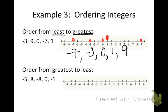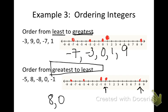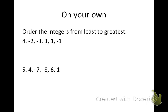We're going to try the next example. I'm just going to put dots for my numbers: negative five, positive eight, negative eight, zero, and negative one. Now I can write my numbers — but this time I need to go from greatest to least. So I'm going to start way over to the right. My first number is eight, then zero, then negative one, then negative five, and then negative eight. So now I have the numbers from greatest to smallest in the correct order.